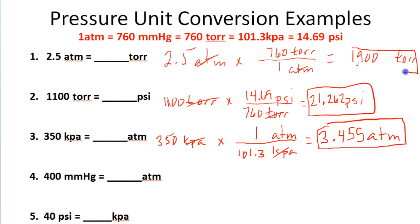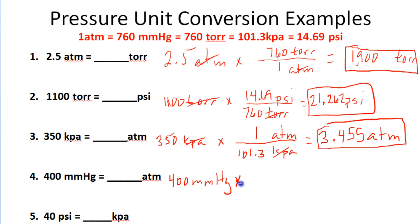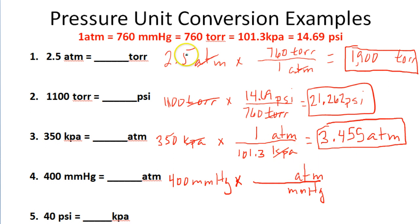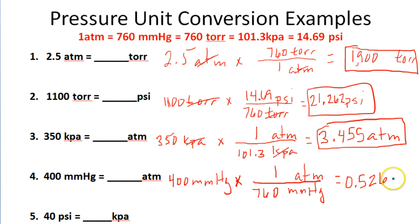In the next example we've got 400 millimeters of mercury and we want to know how many atmospheres of pressure this is. In our equivalent statement we cancel out millimeters of mercury and convert to atmospheres. One atmosphere is equal to 760 millimeters of mercury, so I take 400 divided by 760 and end up with 0.526 atmospheres of pressure.